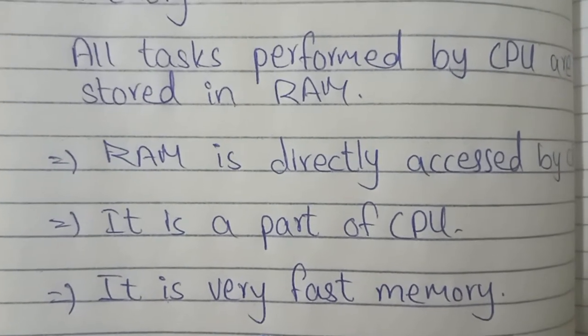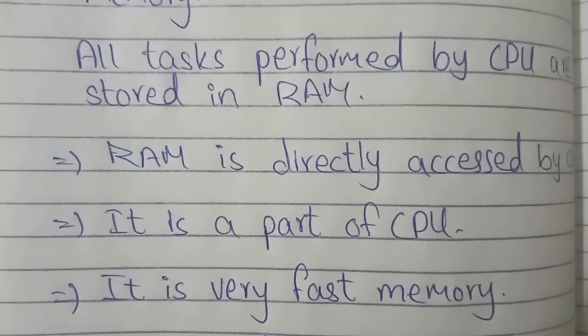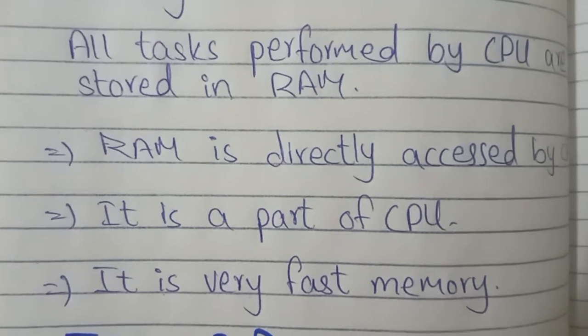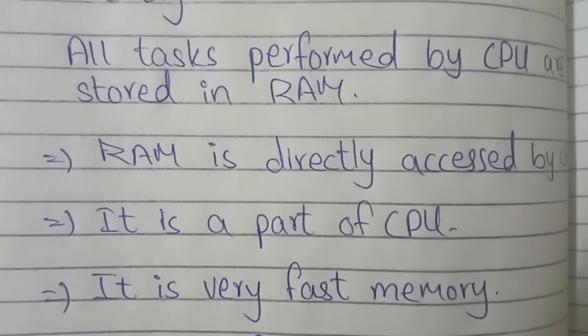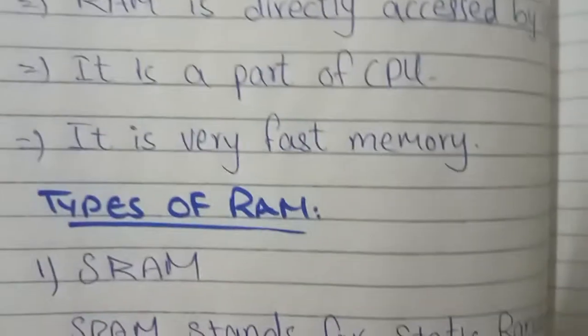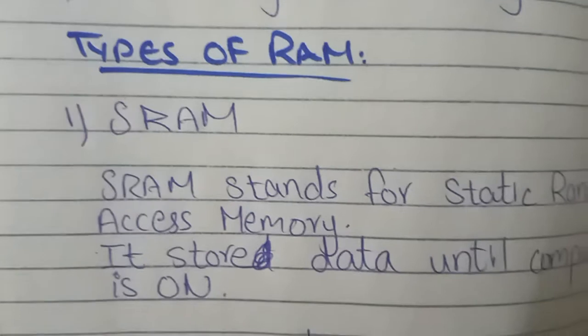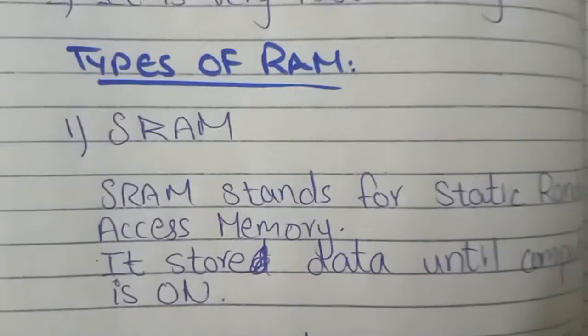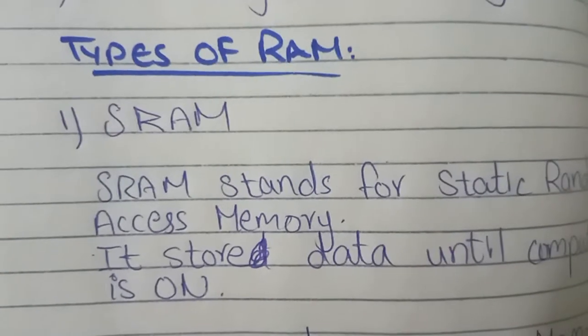RAM is a fast memory. Random Access Memory is a fast type of memory — data can be stored very quickly. Types of RAM are SRAM and DRAM.